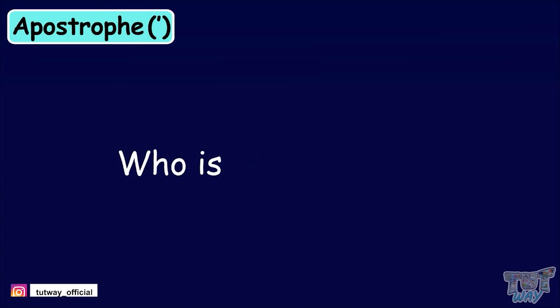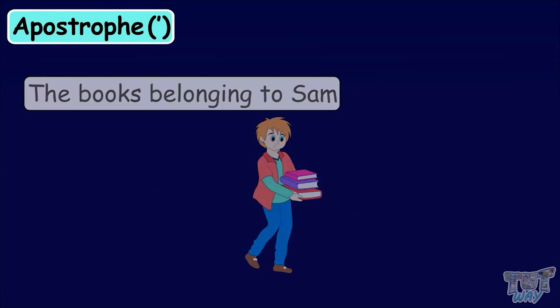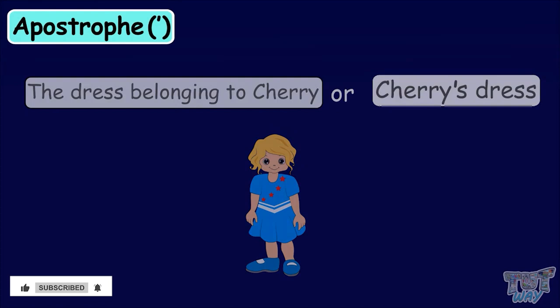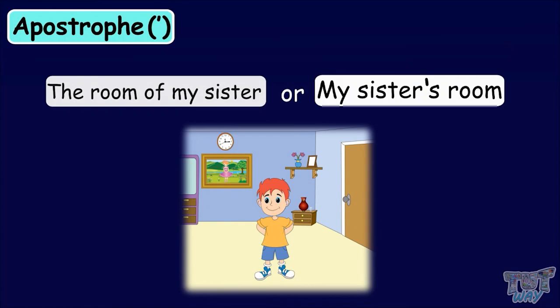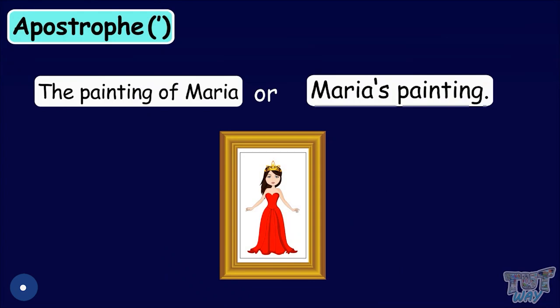Apostrophe is also used to show the possessive case. Like, if we want to say that the books belong to Sam, we can say Sam's books. The dress belonging to Sherry can be written as Sherry's dress. The room of my sister can be written as my sister's room. The life of a woman can be written as a woman's life. The painting of Maria can be written as Maria's painting.